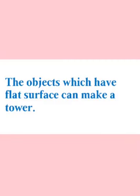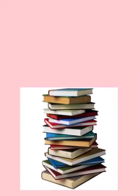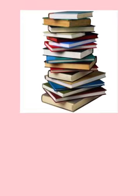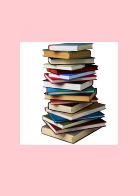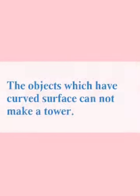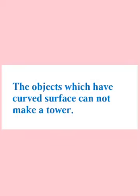Kids, we can make a tower of objects which have a flat surface. So we can make a tower of books. Here you can see in the picture a tower of books. The objects which have a curved surface cannot make a tower, so we cannot make a tower of lemon.